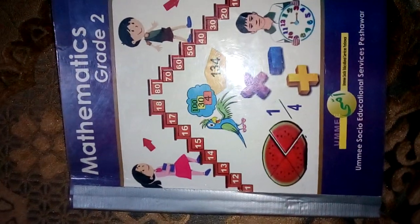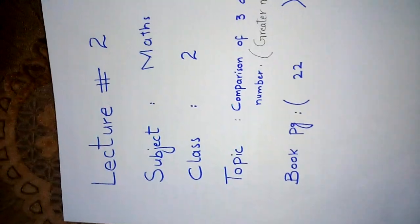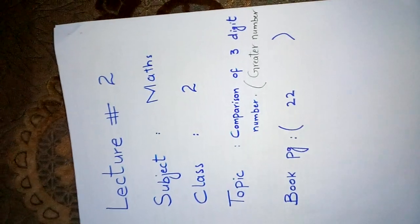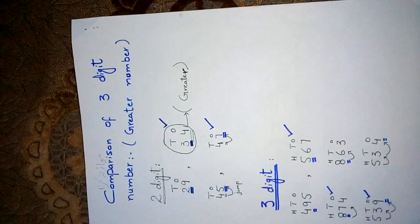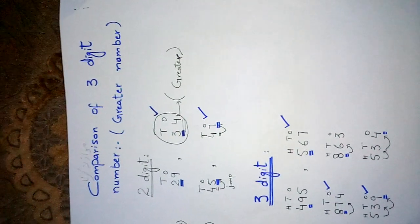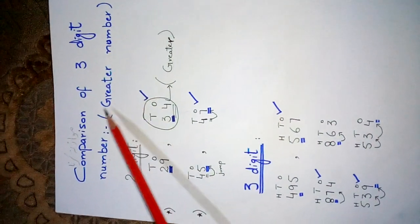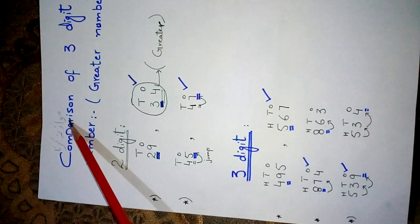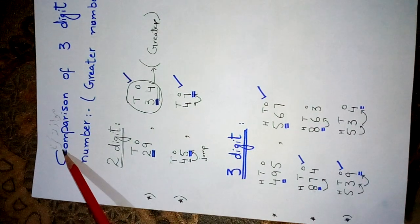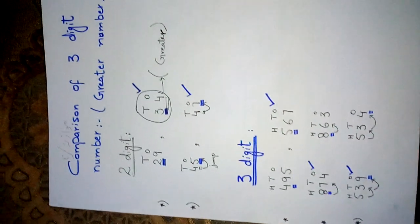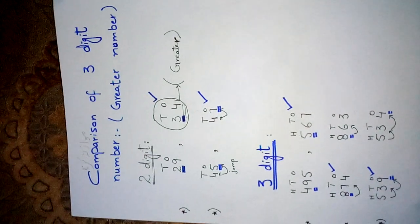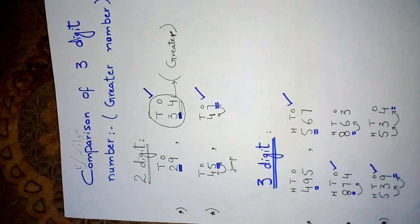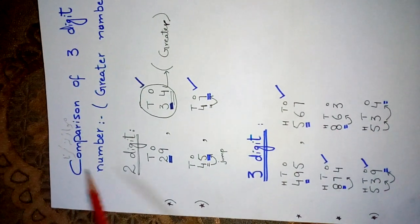Today I explain the topic comparison of three-digit numbers, meaning greater number, on book page 22. Actually on book page 22, the topic name is greater number, but for greater number we will learn comparison. What's the meaning of comparison? Comparison means مقابلہ کرنا. When we have any two three-digit numbers, how do we identify which number is greater and which is smaller? We will learn this through comparisons.